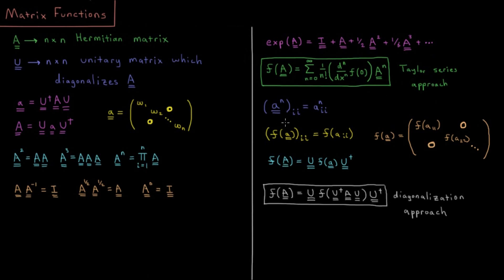Another approach is to notice that for diagonal matrices, if we take a diagonal matrix to the nth power, the elements are just the diagonal elements raised to the nth power. When the matrix is diagonal, none of the elements interact with one another when we multiply the matrix by itself. So to take a function acting on a diagonal matrix, we just take the function and act on the diagonal elements: f of little a is just f applied to each of the diagonal elements.